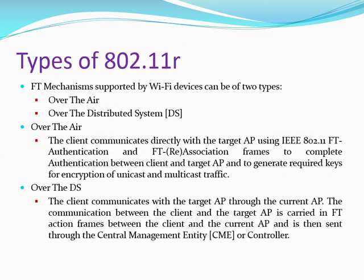11r defines two different mechanisms to overcome the deficiencies of roaming and to provide uninterrupted access. The two methods supported are over-the-air and over-the-DS (over the distributed system). In over-the-air, the client communicates directly with the target AP over the air using fast transition frames to get authenticated and to generate encryption keys. In over-the-DS, the client gets authenticated with the target AP via the current AP and then generates encryption keys by communicating to the target AP directly.